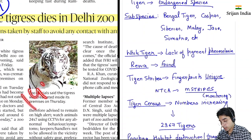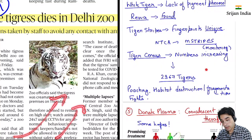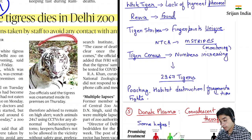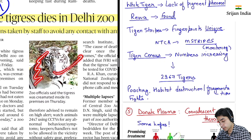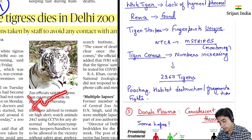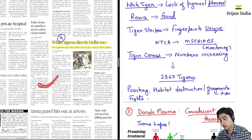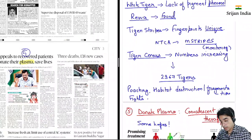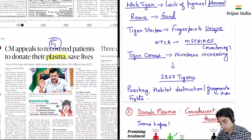Tigers ko problem hoti hai poaching ki — inaka shikaar kiya jaata hai inki skin ke liye. Inaka habitat loss ho raha hai, destruction aur fragmentation ho raha hai. Tiger ek territorial animal hai, apex predator hai, toh inmein fight bhi hoti hai, kaafi tigers apni life lose karte hai. So this is about tigers. Then Delhi chief minister is saying ki recovered patients to donate their plasma to save lives.